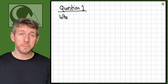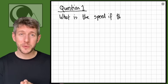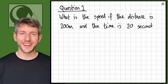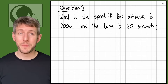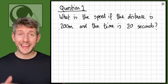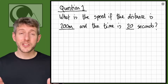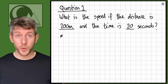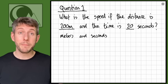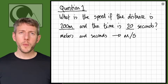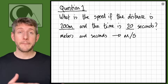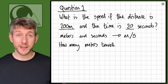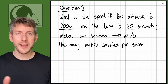Let's look at this first question: what is the speed if the distance is 200 meters and the time is 20 seconds? So what speed is somebody going if they travel 200 meters in 20 seconds? We have meters and seconds, so the unit of speed here is meters per second — how many meters are they going every second? If someone's going 10 meters per second, that means they travel 10 meters for every second.